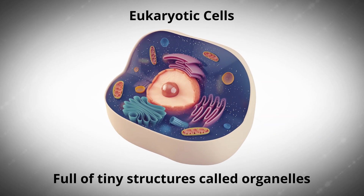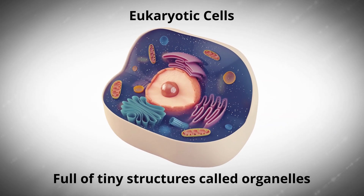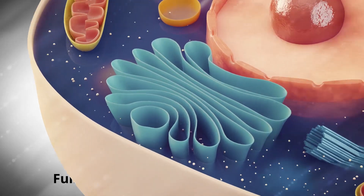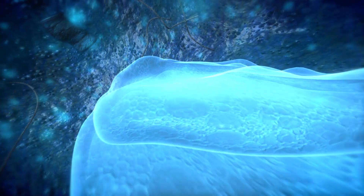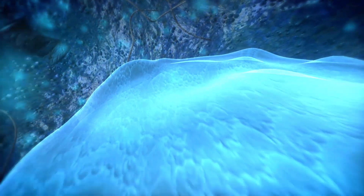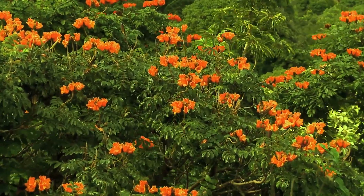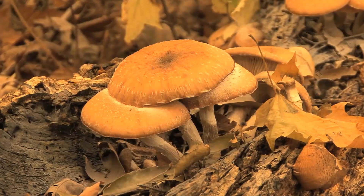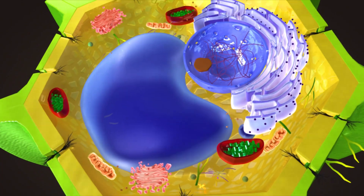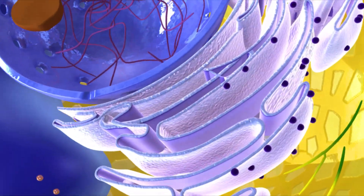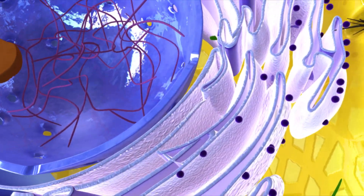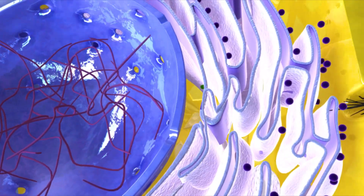A eukaryotic cell, on the other hand, is full of tiny structures called organelles, each performing a very specific function within the cell. Eukaryotic cells are present in plants, animal, and fungi cells. Let's examine these structures in more detail and see how they function in a eukaryotic animal cell.